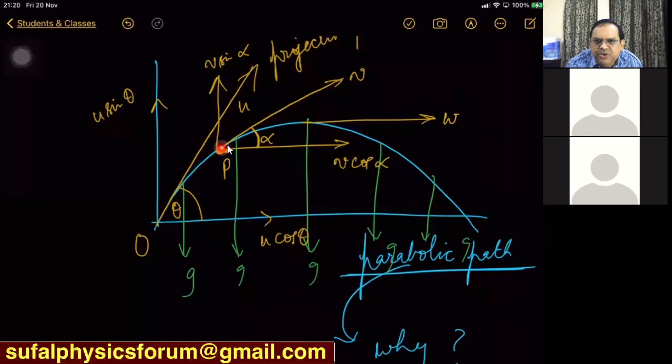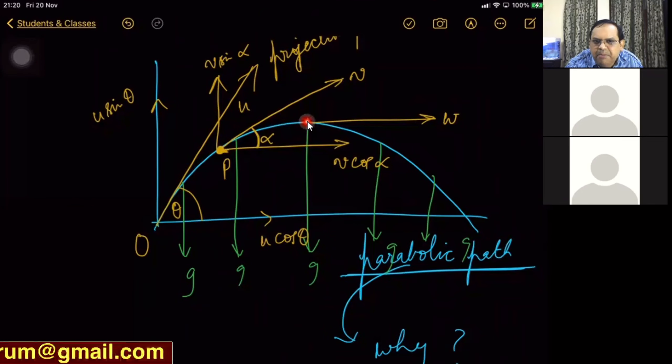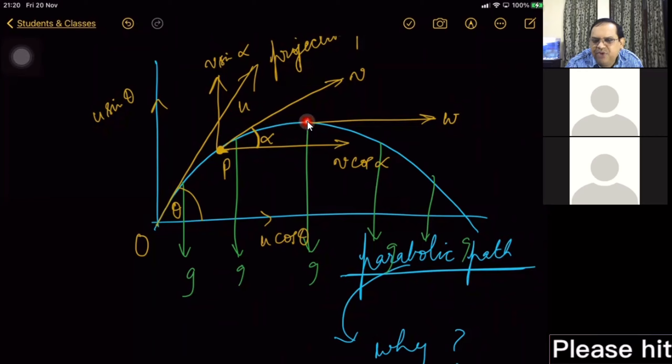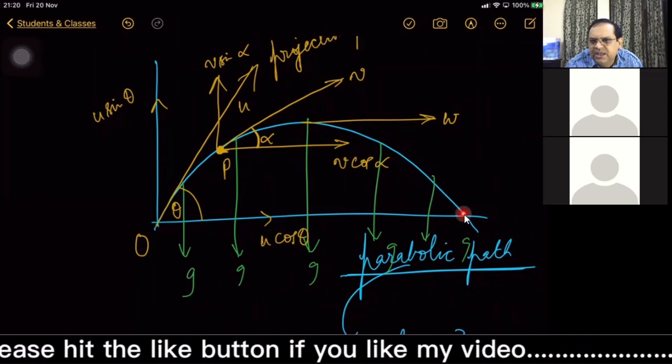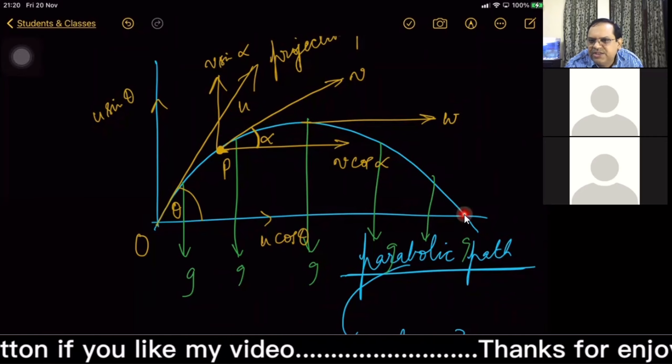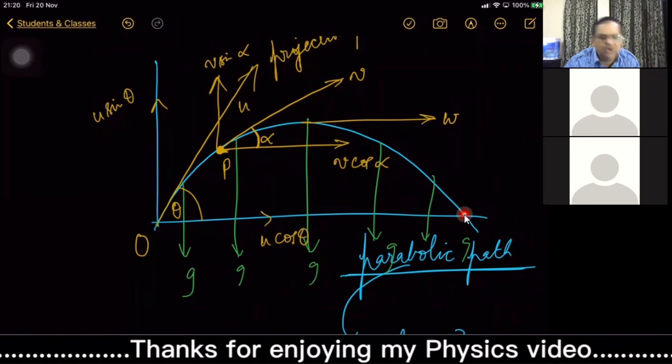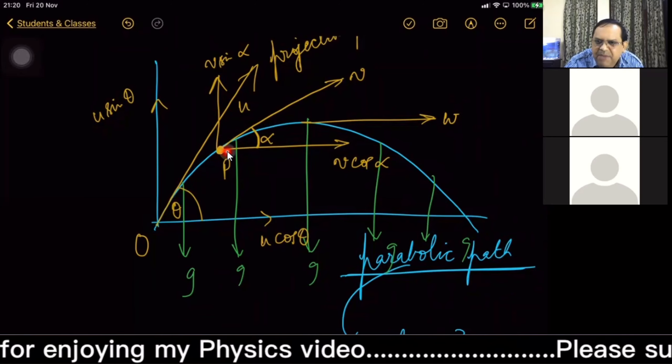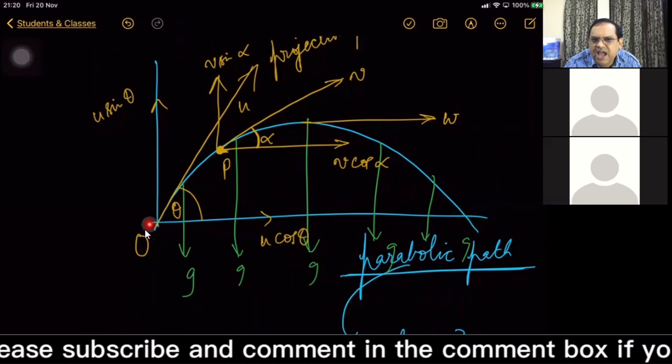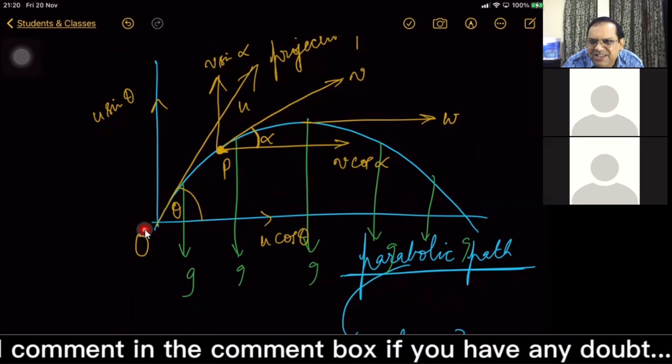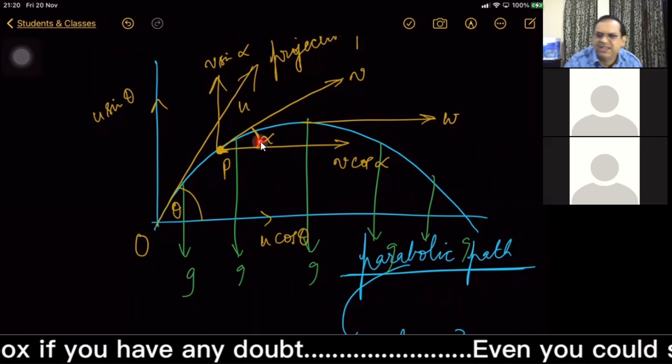From here to here, particle is taking how much time? This time is known as time of ascent. And from maximum vertical height to again here, this is called time of descent. And for any particular projectile, for any projectile, time of ascent should be equal to time of descent. Yes, yes sir, good.